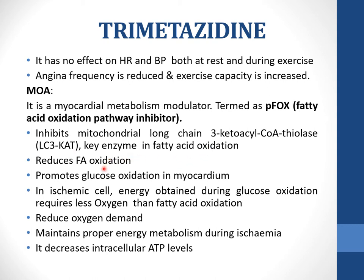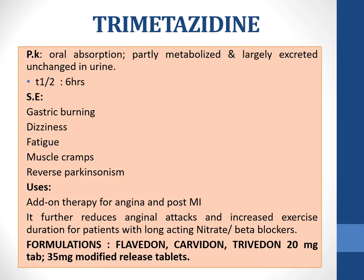Trimetazidine reduces fatty acid oxidation and promotes glucose oxidation in the myocardium. In ischemic cells, energy obtained during glucose oxidation requires less oxygen than fatty acid oxidation. By promoting glucose oxidation, this drug reduces oxygen demand in the ischemic area and maintains proper energy metabolism during ischemia. It also decreases intracellular ATP depletion. Its pharmacokinetics show good oral absorption, it is partly metabolized and largely excreted unchanged in urine, with a half-life of 6 hours.